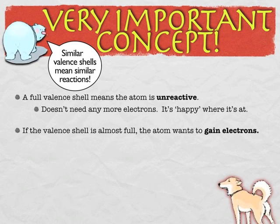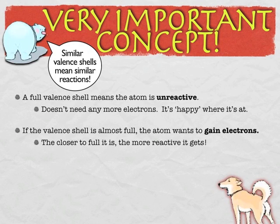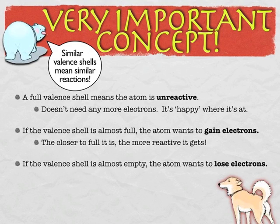The noble gases start with a full outer shell, but other atoms will gain or lose electrons to get to the same place. If you're almost at a full outer shell, you'll want to gain electrons — this is what nonmetals like to do. They have 6 or 7 valence electrons, and they want to gain the last couple to get there. The closer they are to a full shell, the more reactive they are. Think about collecting Pokémon cards: if a rare 8-card edition exists and you have 7 of those 8, you'd have a very strong desire to get that last card no matter what.